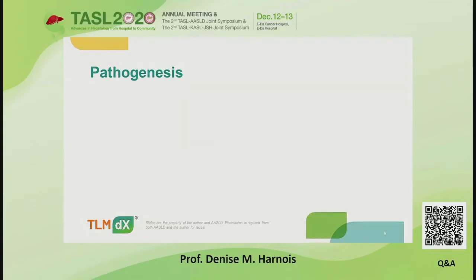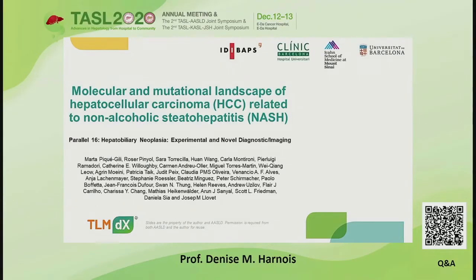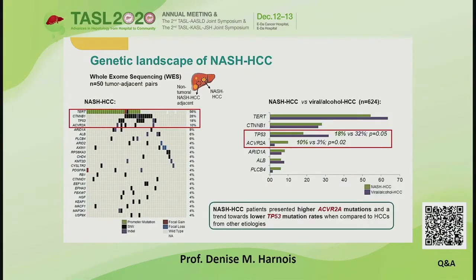The first abstract looks at pathogenesis. This abstract, the molecular and mutational landscape of hepatocellular cancer related to non-alcoholic steatohepatitis, was presented at Parallel Session 16. This looked at the genetic landscape of non-alcoholic steatohepatitis associated hepatocellular tumors, and it evaluated the whole exome sequencing of both the tumor and the adjacent tissue. Four genes were identified as altered in at least 10% of tumors.